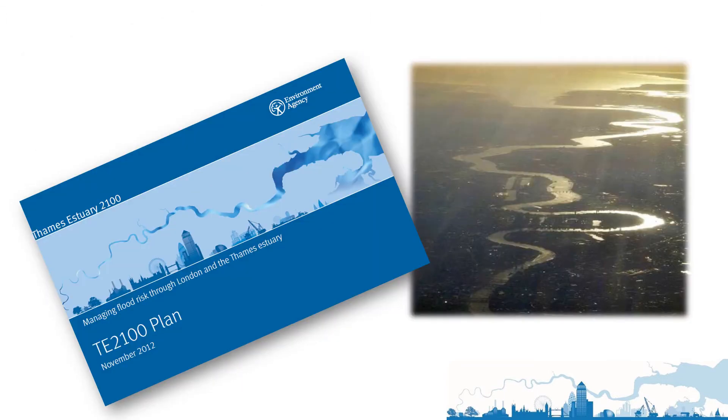One of the earliest and classic examples of an adaptation pathway in action is the Thames Estuary 2100 plan. The plan for managing flood risk from rising sea level in the Thames Estuary up until the year 2100 and beyond.